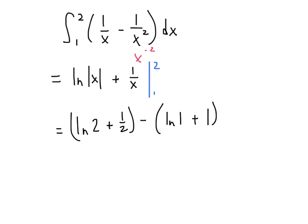Now, natural log of 1 should ring a bell. That's 0. So really I just have the natural log of 2, plus 1 half, minus 1. And that all simplifies to natural log of 2, minus 1 half.